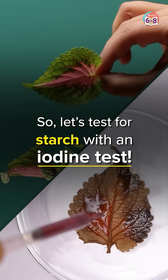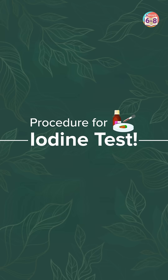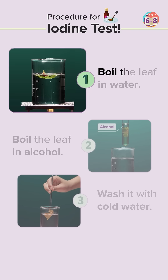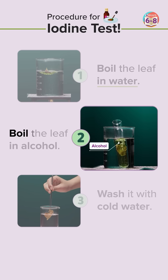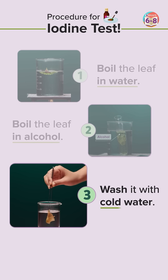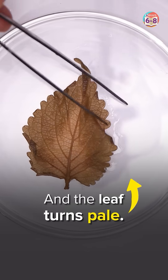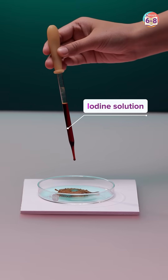So let's test for starch with an iodine test. Here we have the procedure of the iodine test. First, we'll be boiling the leaf in water to break the cell wall. Then we'll be boiling with alcohol to remove the chlorophyll. And then we'll be washing it with cold water to remove the excess pigment. The leaf will turn pale.